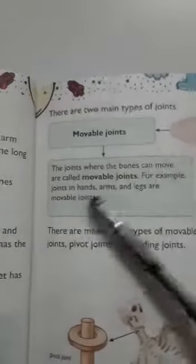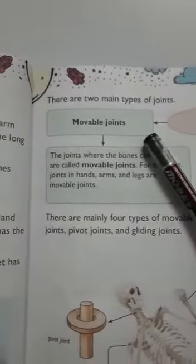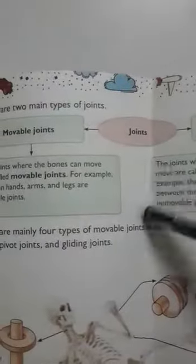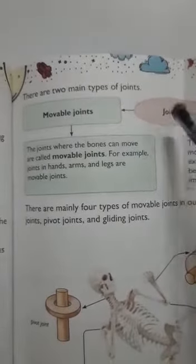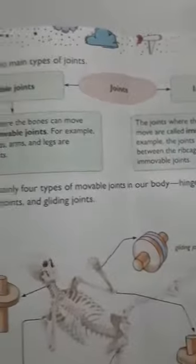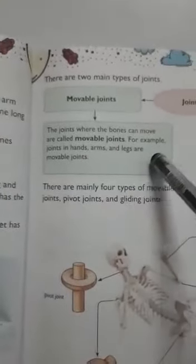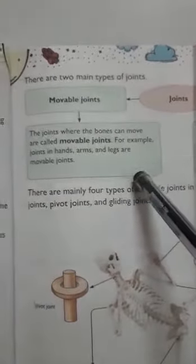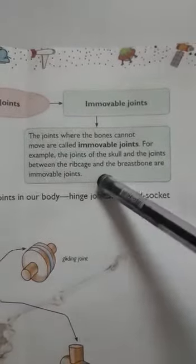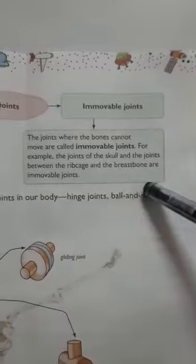There are two types of joints: movable joints and immovable joints. The joints where bones can move are called movable joints — for example, the joints of our arms and legs. The joints where bones cannot move are called immovable joints — for example, the joints of the skull and the joints between the ribcage and the breastbone.